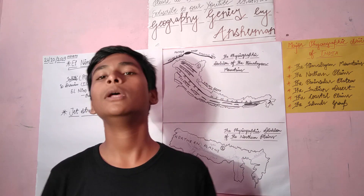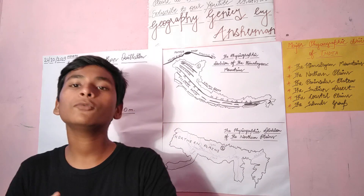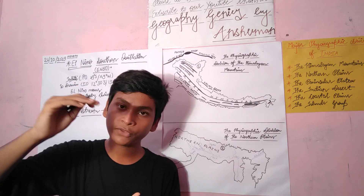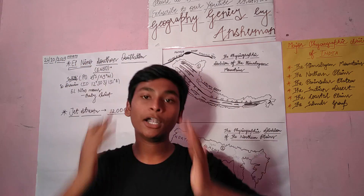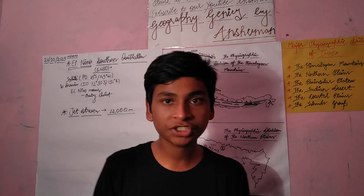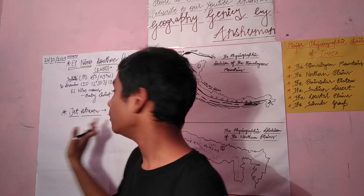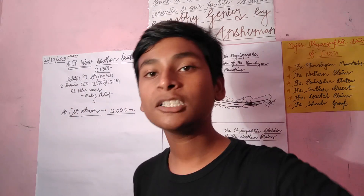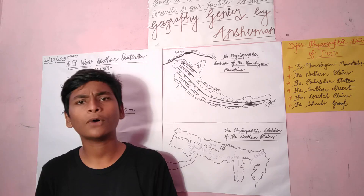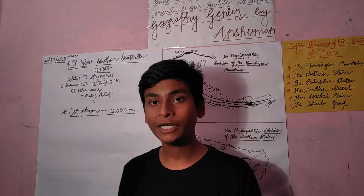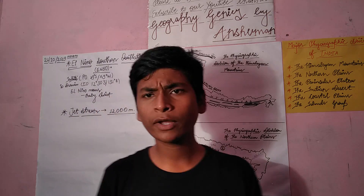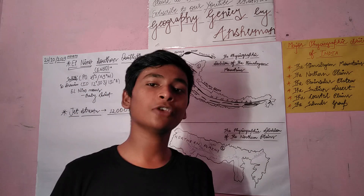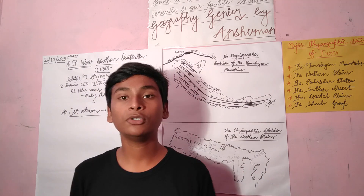Many people ask whether the jet stream is responsible for the monsoon — the answer is no. The clouds responsible for monsoon are not above 2,000 meters, so they remain below the troposphere level where the jet stream operates. The jet stream is a narrow belt formation at around 12,000 meters in the troposphere. In summer, the speed is approximately 110 km per hour, whereas in winter the speed reaches about 184 km per hour.